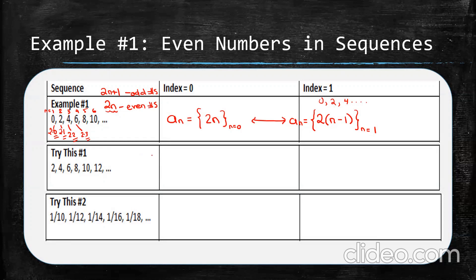You can now try some of the other practice problems. For 'try this 1,' it's nearly the same sequence except the 0 is missing. For 'try this 2,' it's all even numbers but starting at 10, so think about an equation of the form 2n plus some constant — where the starting constant depends on your index.